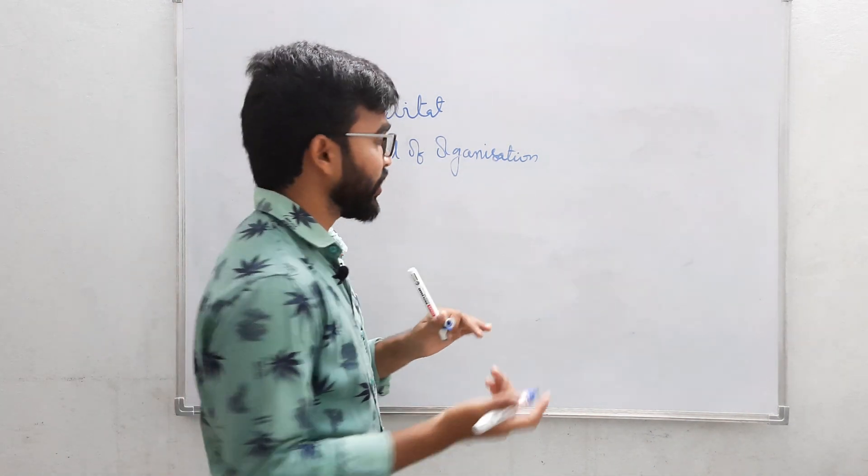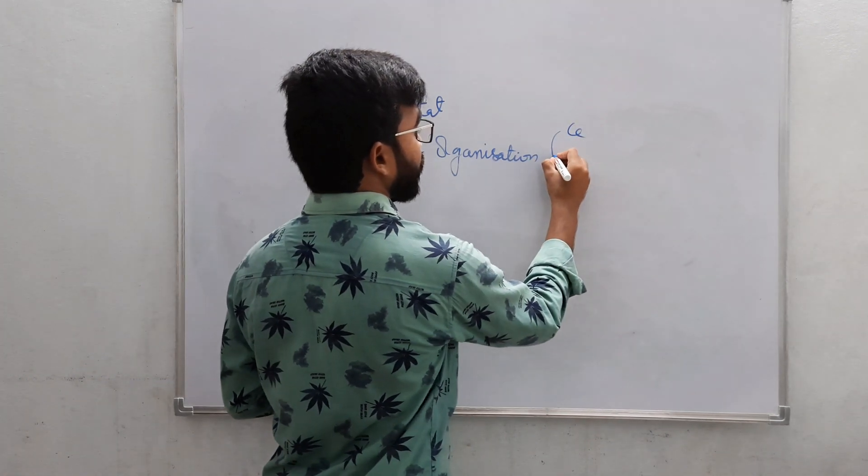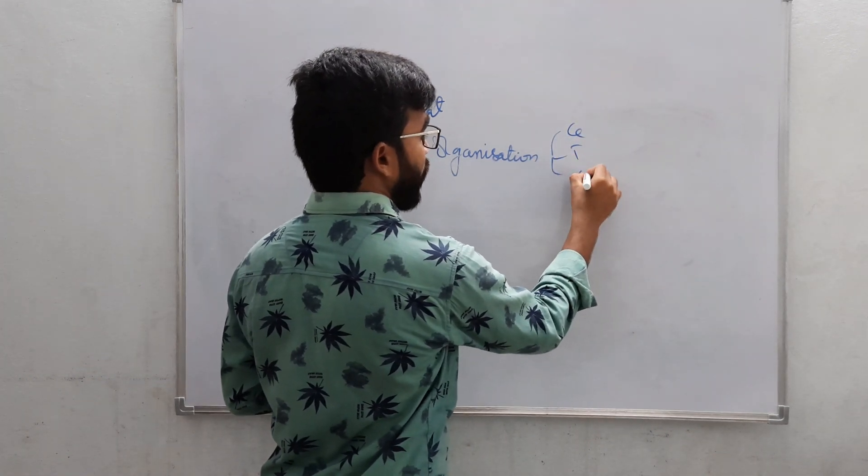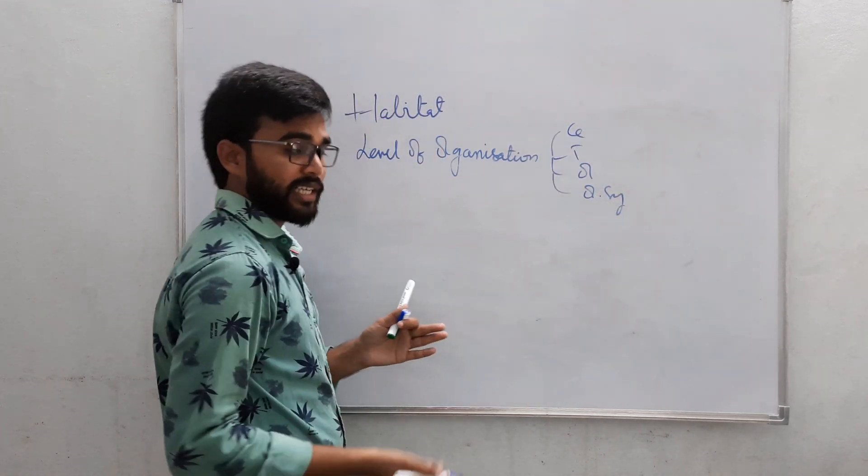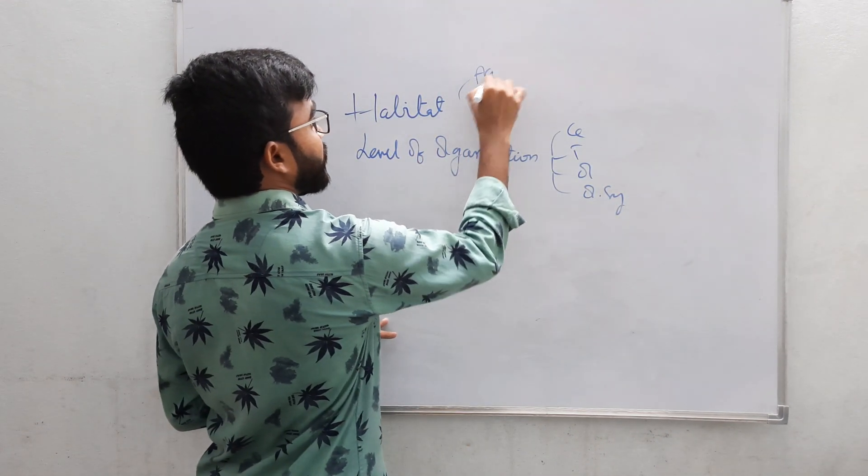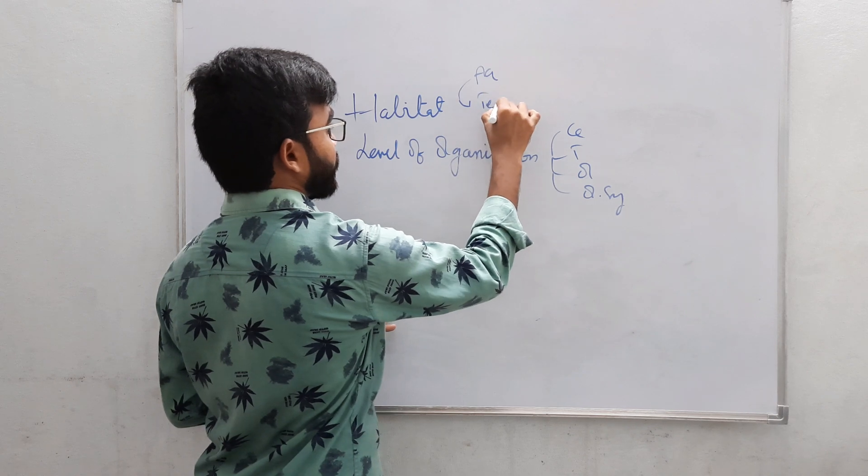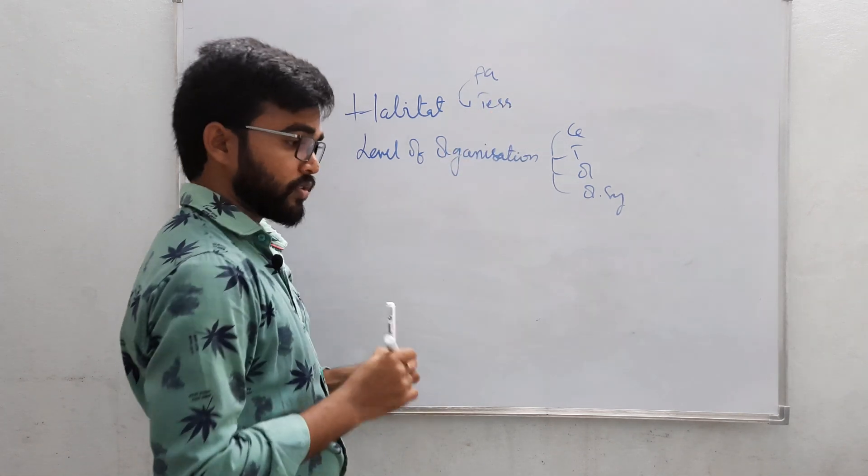The levels of organization, as you all know: cellular, tissue, organ and organ system level. In the habitat: aquatic or terrestrial.